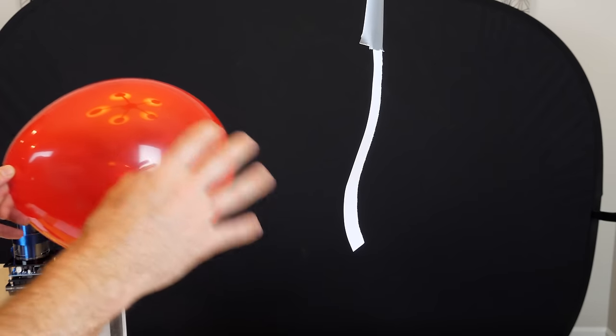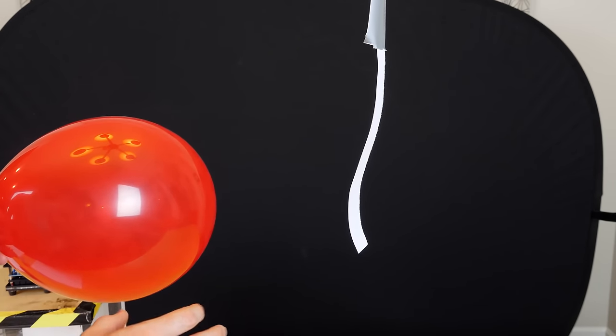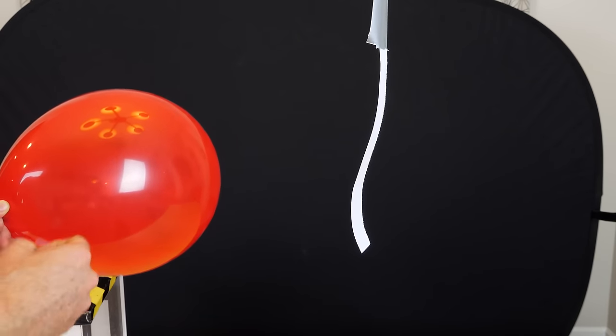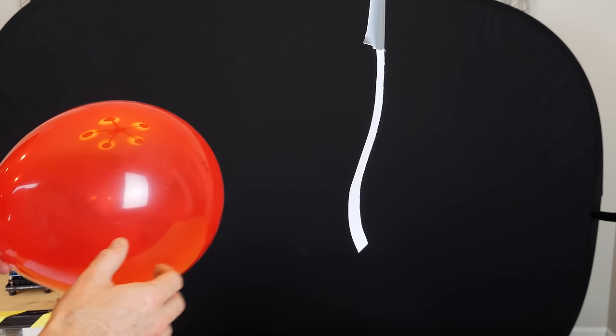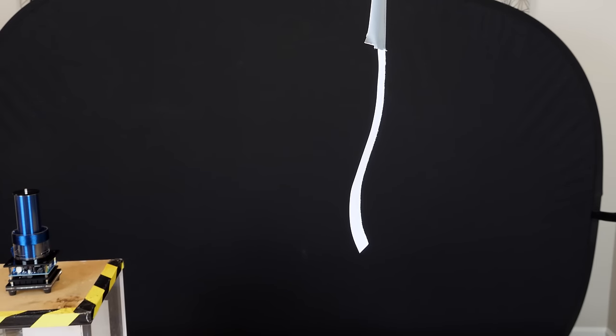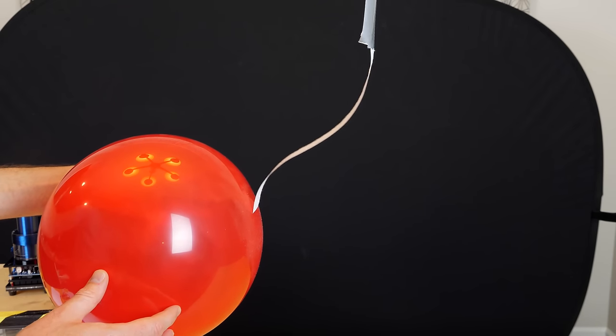In order to understand how Nikola Tesla wanted to transmit power, first you have to understand that it's pretty easy to transmit power wirelessly. For example, all you need is a balloon and a piece of paper. So I'm going to charge this balloon up by rubbing it on my floor. Watch what happens when I bring the balloon near the paper. The paper goes towards it.